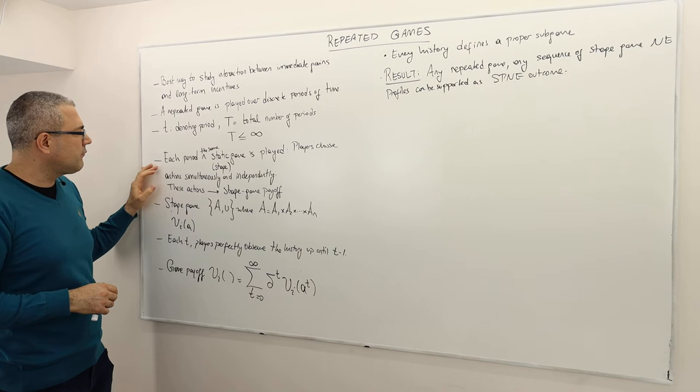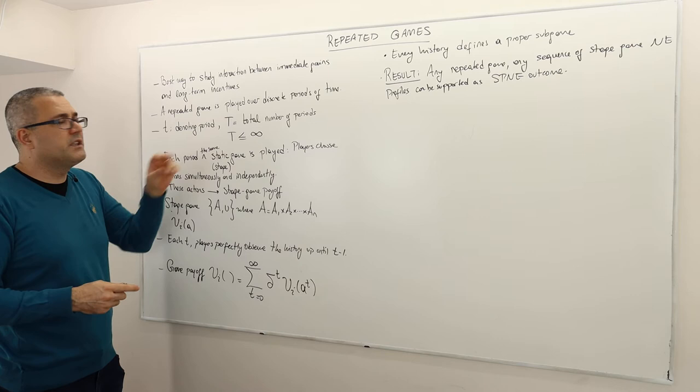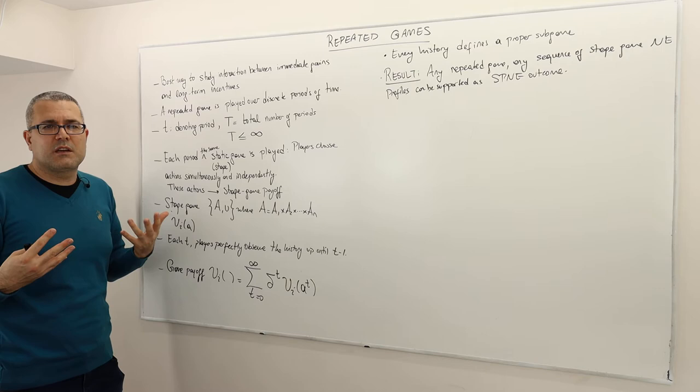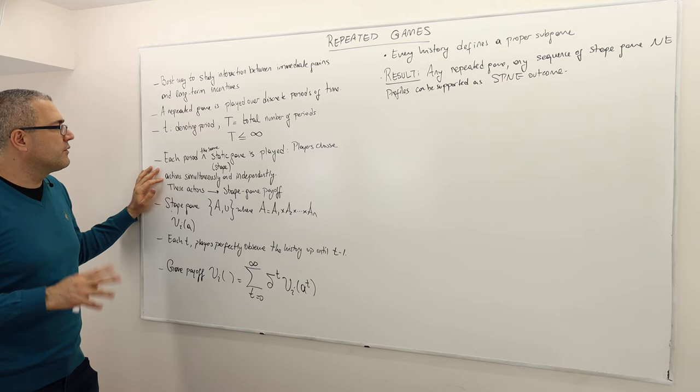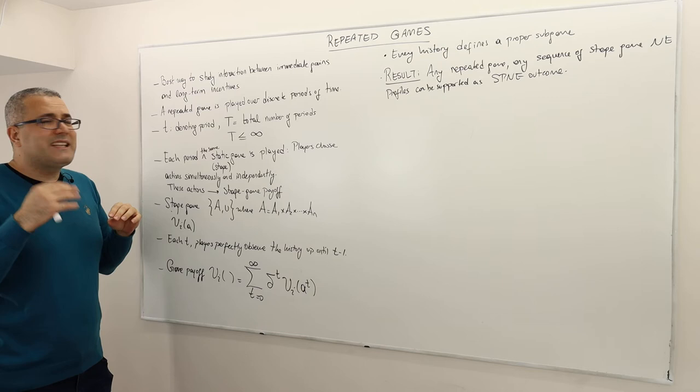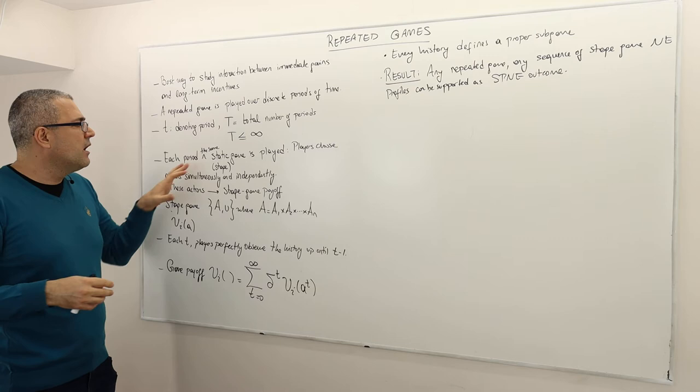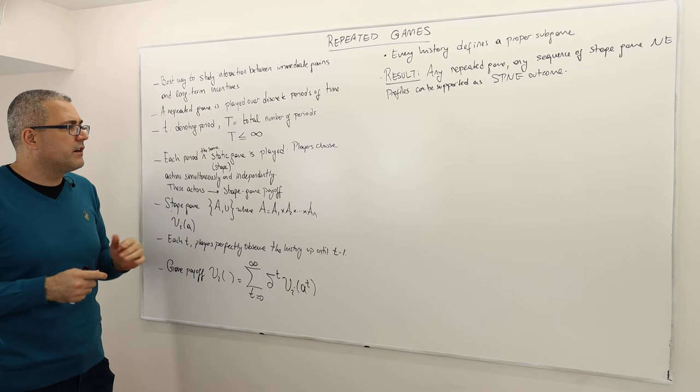You may wonder how we're going to analyze those games when T is infinite, because we can't really use backward induction — there is no last subgame. Well, there's another trick to analyze those games, which will come up later. Each period, the same static game — a one-shot or simultaneous move game — will be played again and again. We usually call this static game the stage game.